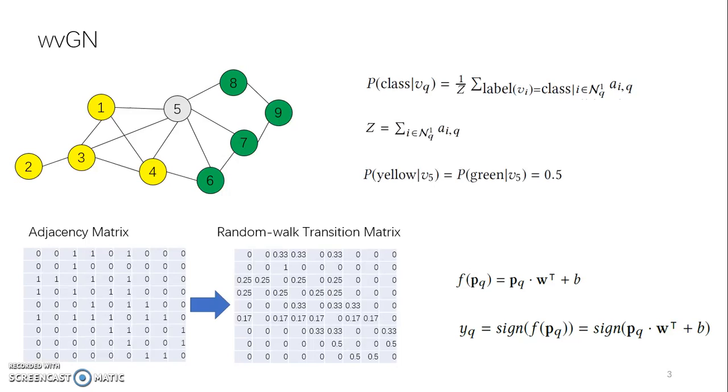To solve this problem, we change the hard label problem to the soft label problem. We first transform the vertex from graph space to vector space. Given a network, we know its adjacency matrix. We compute the random walk transition matrix and use each row to denote each vertex.